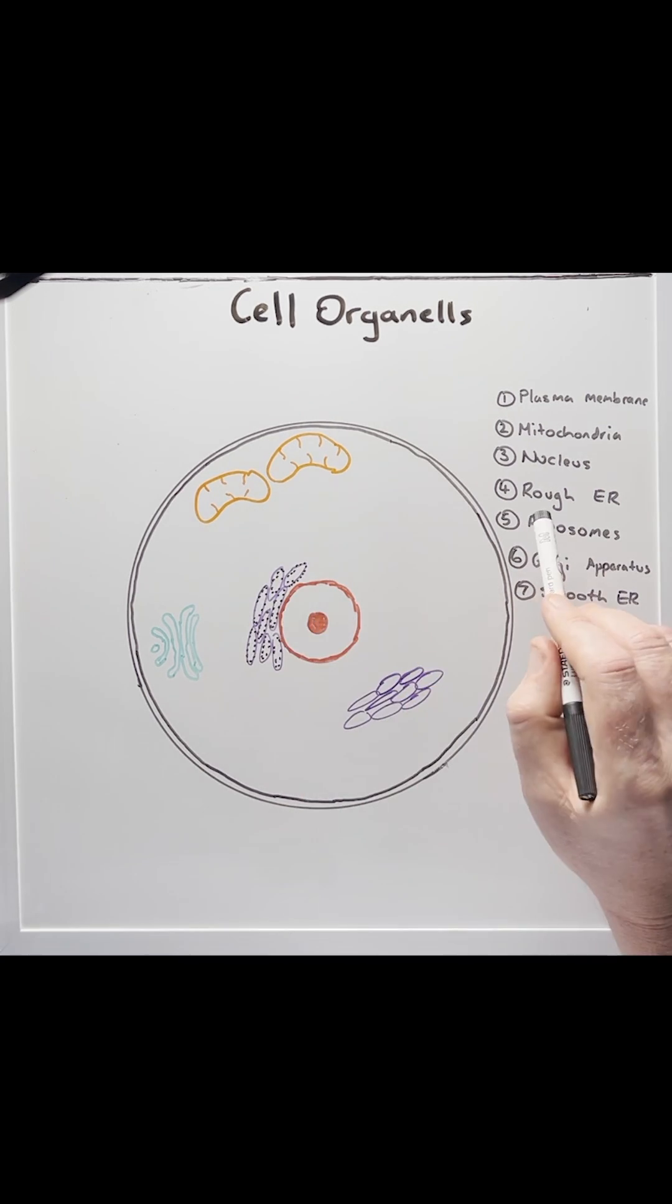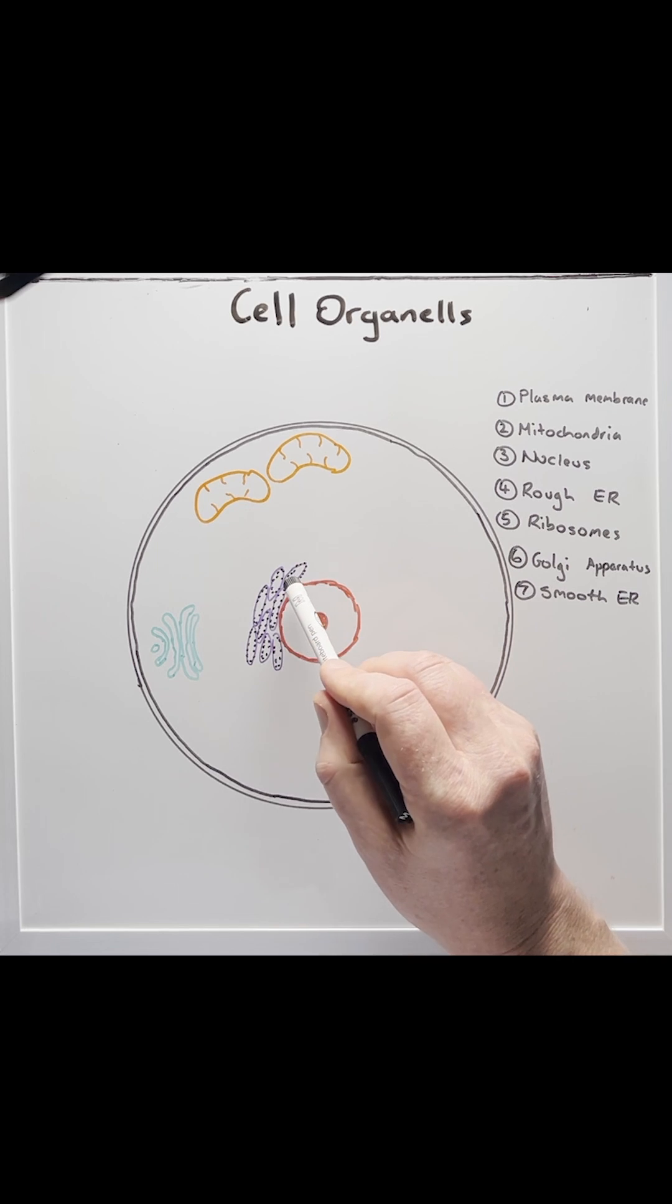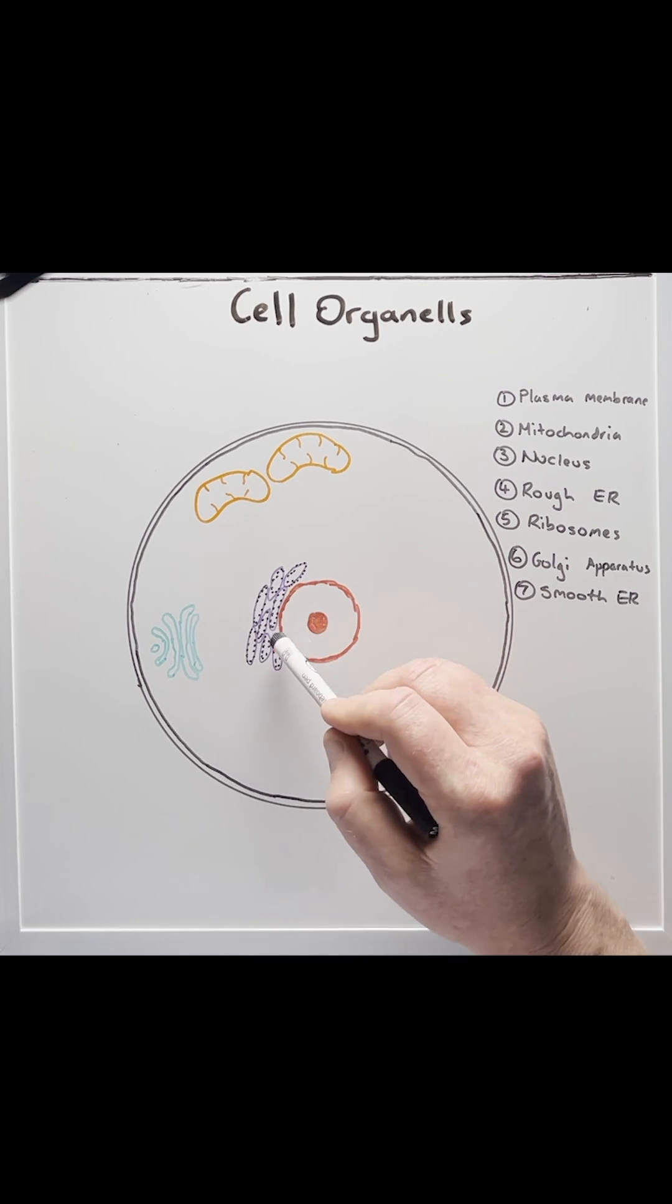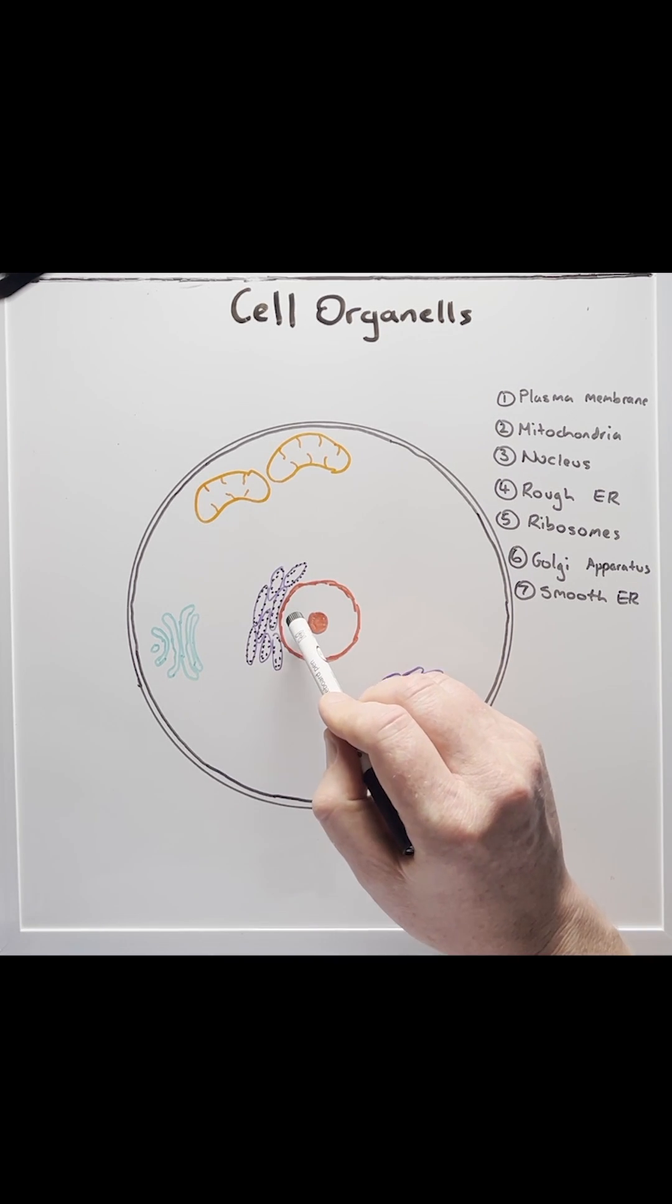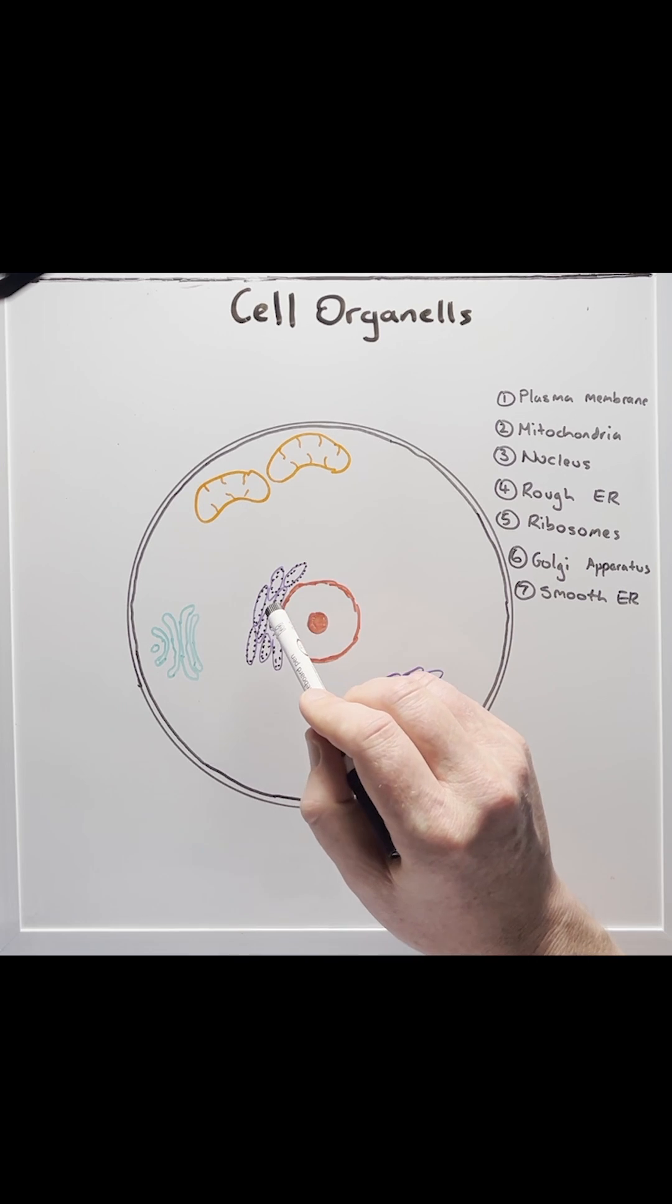Next door to the nucleus is the rough ER, number four. The rough endoplasmic reticulum is the protein factory. It grabs the RNA that's made from the nucleus and turns it into the proteins.